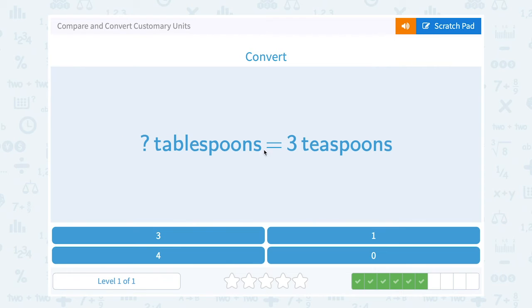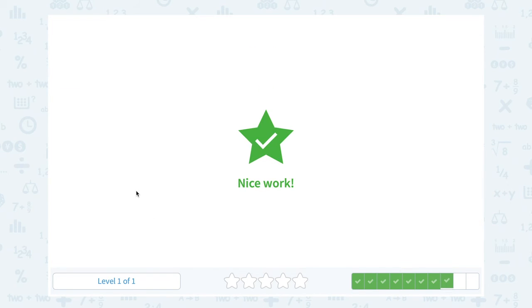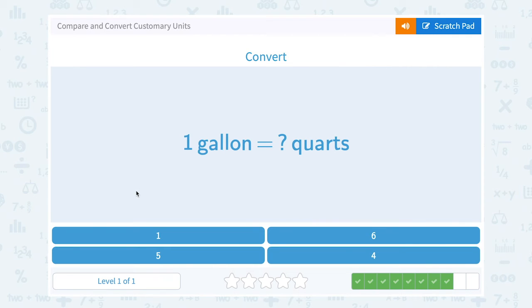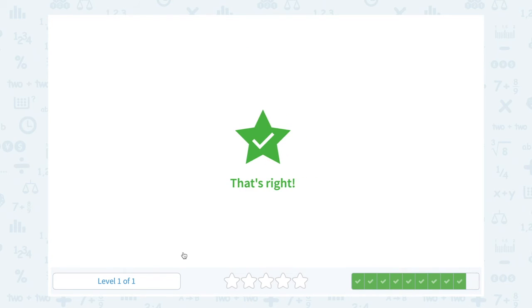Blank tablespoons is equal to 3 teaspoons. That would be 1. There's 1 tablespoon. 3 teaspoons is equal to 1 tablespoon. 1 foot is equal to how many inches? 1 foot is equal to 12 inches. 1 gallon is equal to 4 quarts. And 1 yard is equal to 3 feet.